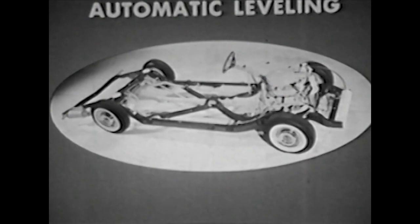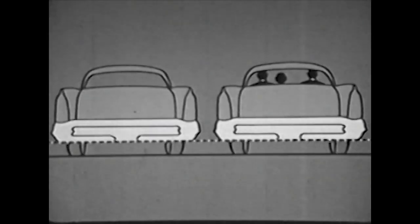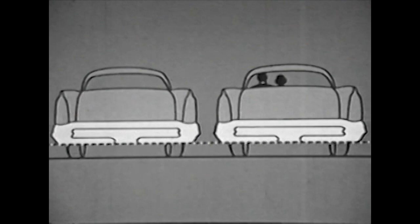The second big feature of Buick's air poised suspension is automatic leveling. A system of leveling valves keeps the car at the same height regardless of the number of people or load in it. When passengers enter or leave the car, additional air automatically enters or leaves the air chambers to return the car to its correct height.